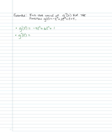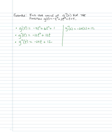Now that we know the second derivative, we can calculate the third derivative. The derivative of -12t² + 12t gives us -24t + 12. So g triple prime of t equals -24t + 12. To find g triple prime of 2, we substitute t = 2: negative 24 times 2 plus 12 equals -48 plus 12, which is -36. So g triple prime of 2 is -36.